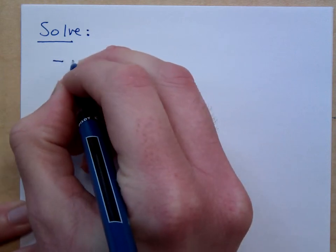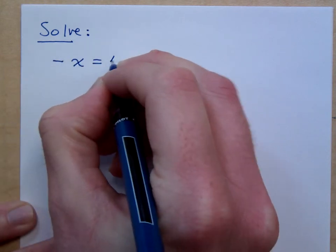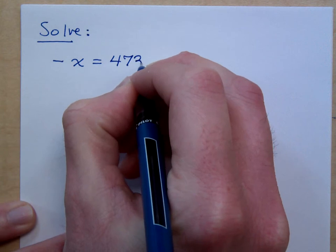Try to solve this. Negative x is equal to 473.